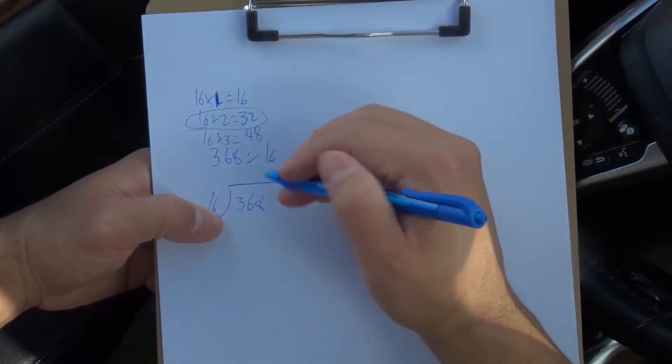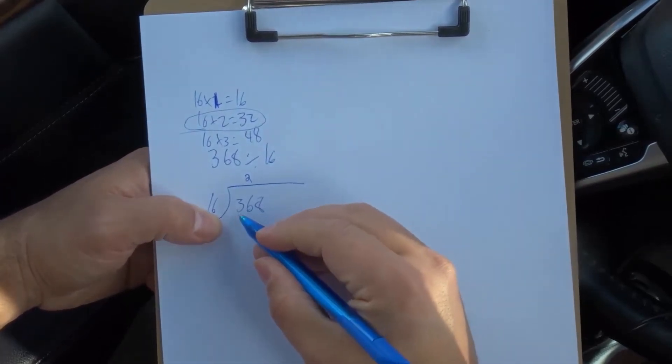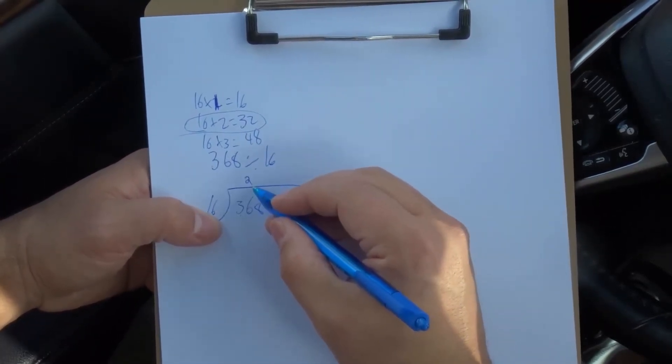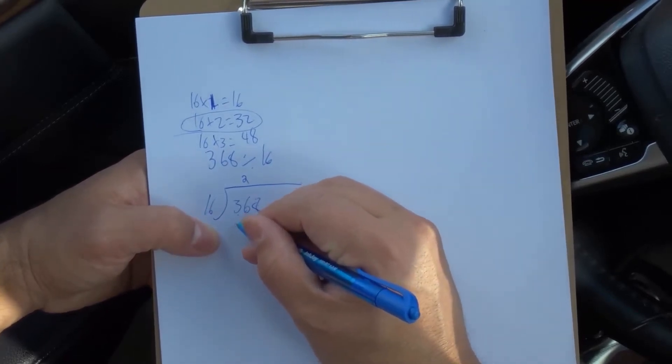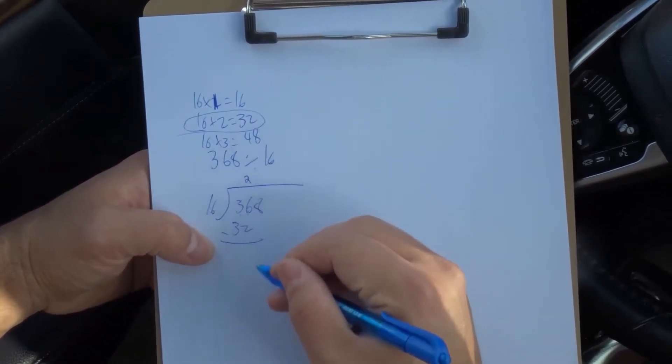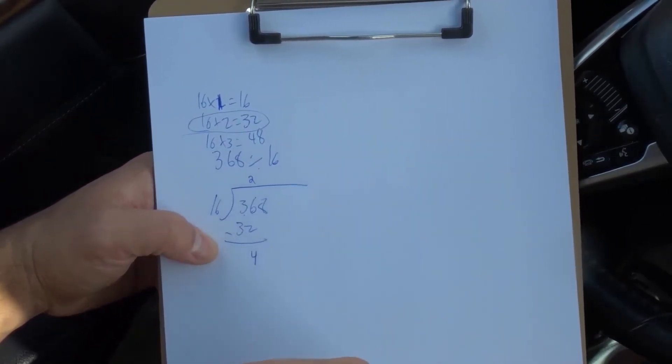So 16 multiplied by 2, I'm going to put the 2 up here, above the 6. So 16 times 2 is 32. I'm going to write 32. Now we subtract. 36 minus 32 is 4. So what we have there is a 4.